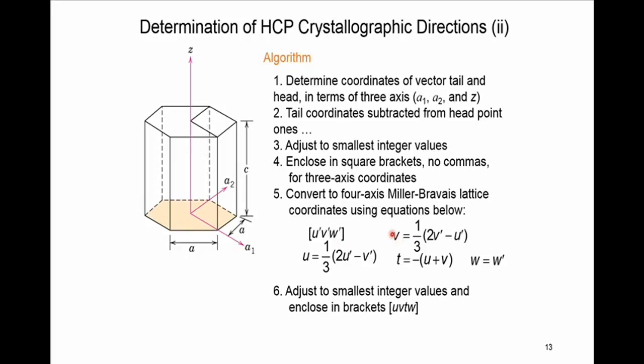Using this relation, we find the values of u, v, t, and w. Again, for u, v, t, w, we adjust to the smallest integers — excluding 0, whichever is smallest we make it 1, and the rest will be higher than 1. We add a bracket with four components: this is our HCP crystallographic direction.